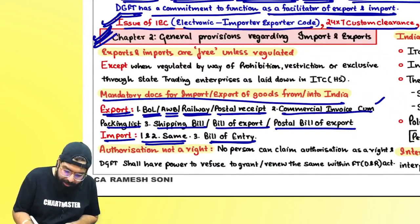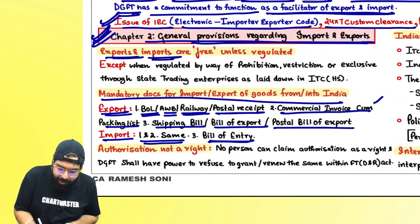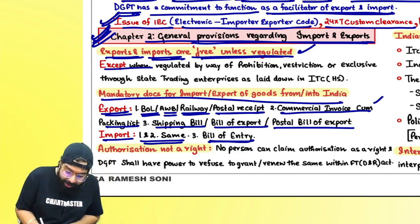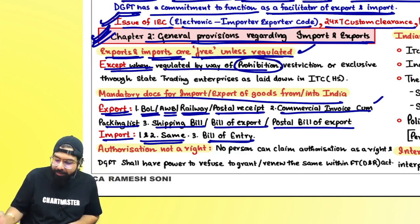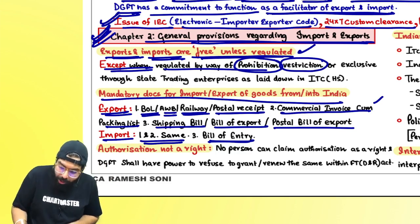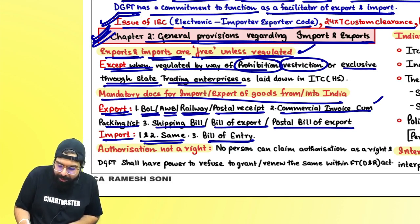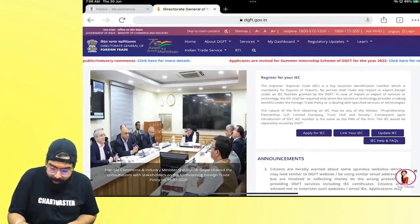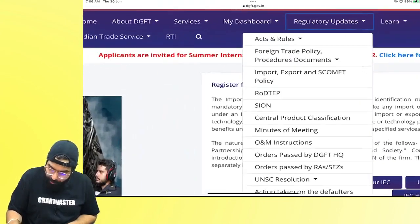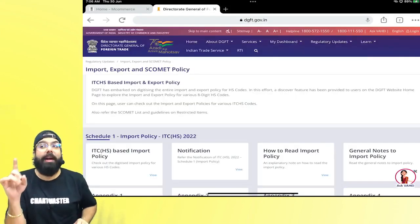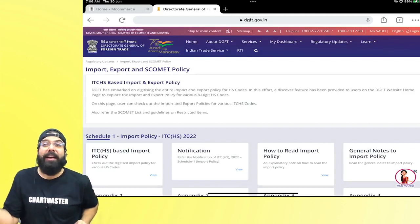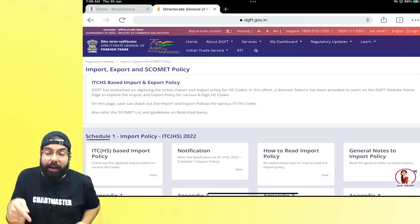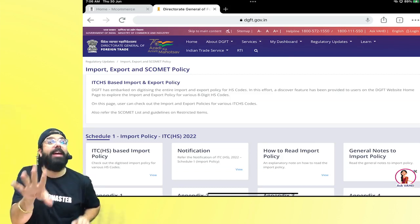Chapter 2: General provisions relating to import and export. Exports and imports are free unless regulated — except when regulated by prohibition, restriction, or exclusively reserved for state trading enterprises as laid down in the ITC-HS. Classification under customs is done to find the rate of duty, but here in FTP, classification in ITC-HS is done to find out the import and export policy.